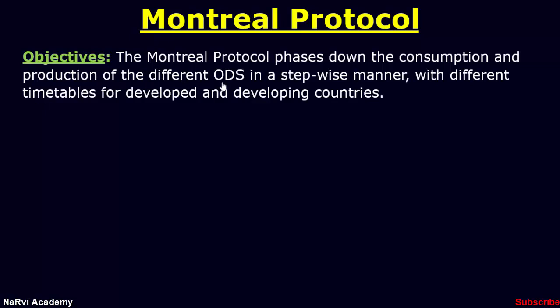The objectives of the Montreal Protocol: the protocol phases down the consumption and production of the different ozone depleting substances in a stepwise manner, with different timetables for developed and developing countries. Under this treaty, all parties have specific responsibilities related to the phase-out of the different groups of ozone depleting substances, control of ozone depleting substances, and trade.